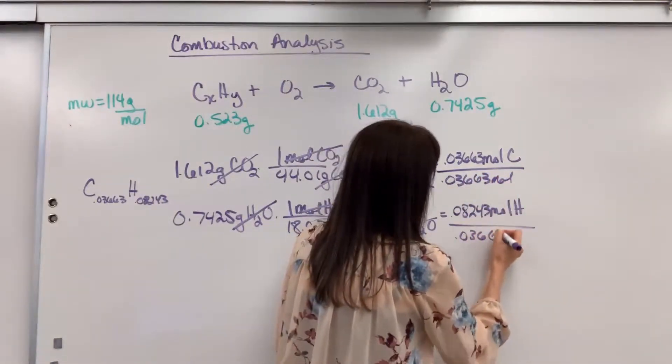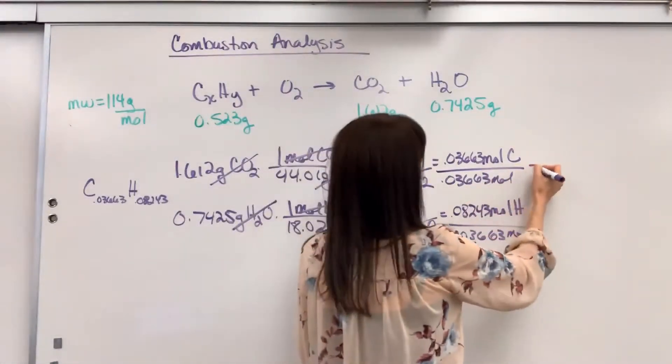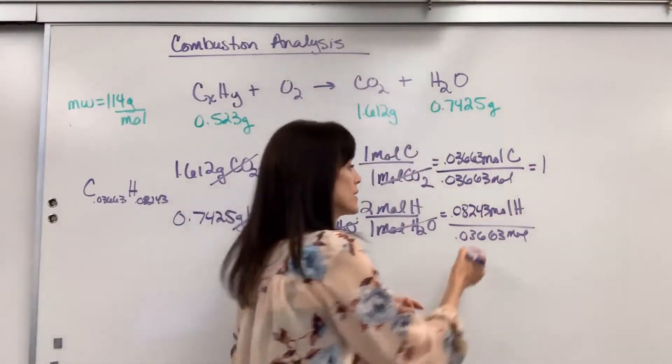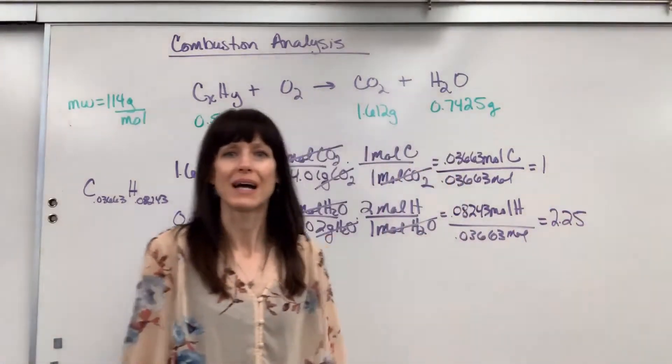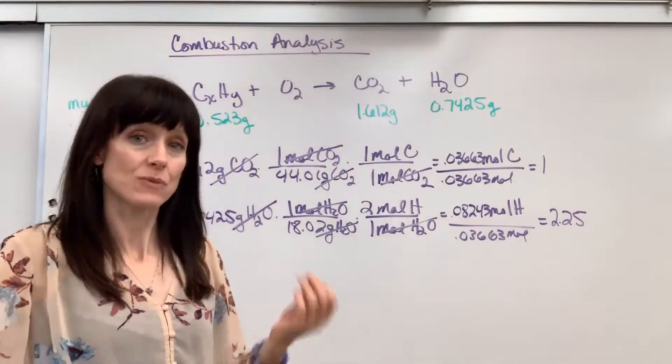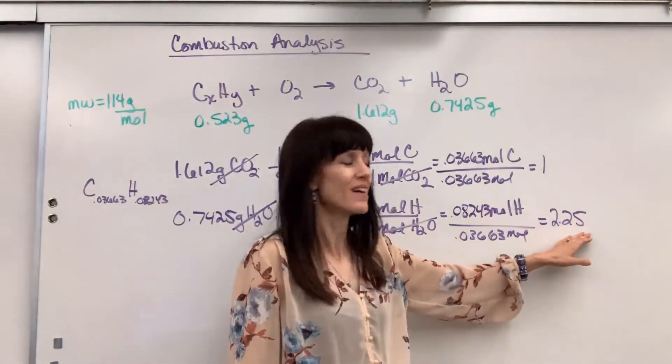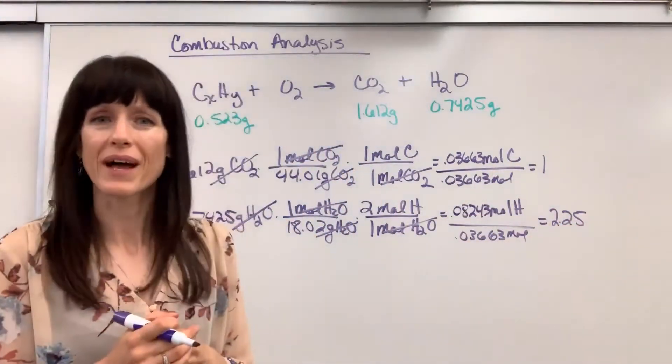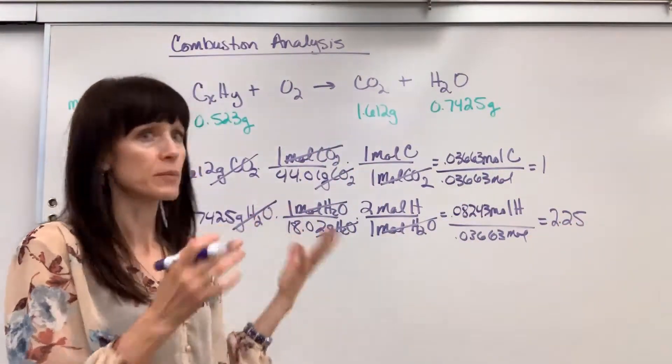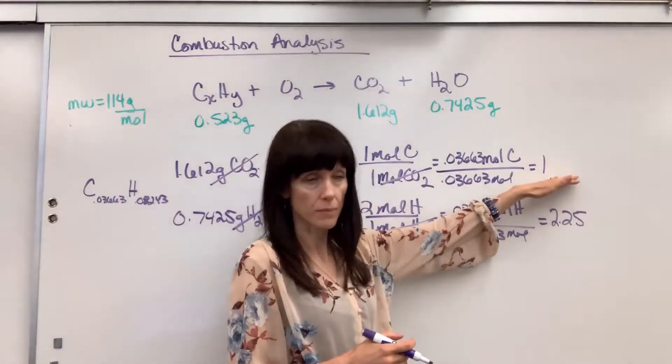I'm going to divide by the smallest mole, 0.03663. When you divide that, we get one for the carbon, and this comes out 2.25. Oh, I'm still not at a small whole number. We've got to bring this to a whole number. And the way we do that, this is a ratio. I'm going to multiply it by a factor. And remember, whatever I multiply this by, I also have to multiply the carbon.